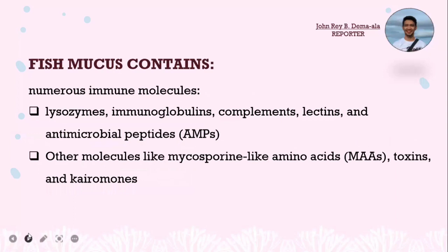Fish mucus contains numerous immune molecules such as lysozymes, immunoglobulins, complements, lectins, and antimicrobial peptides, and other molecules like mycosporin-like amino acids, toxins, and chiromones. These are uncharacterized semi-chemicals that mediate interspecific interactions by providing information that benefits individuals of another species and harms the emitter.